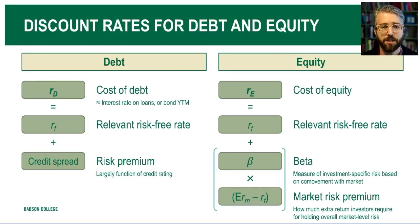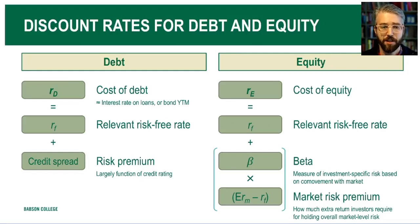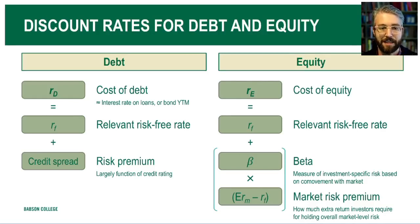The relevant risk-free rate on a bond is typically what a lender could earn on a risk-free loan of the same duration. So on a five-year bond, we look for a five-year risk-free benchmark; on a ten-year bond, a ten-year risk-free benchmark. The credit spread is the additional rate of return that bond investors require as compensation for taking on risk associated with a risky bond rather than a risk-free one. Since the major source of risk on bonds is default risk — the possibility of non-payment — this risk premium is largely a function of a bond's credit rating.